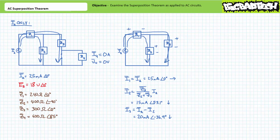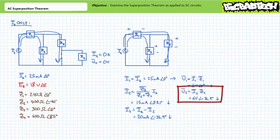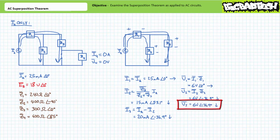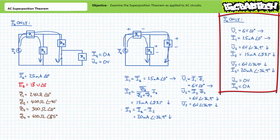Now let's consider voltage. An application of Ohm's law demonstrates V1 will be 6 volts at an angle of zero degrees, positive to negative left to right. V2 will be 6 volts at an angle of negative 36.9 degrees, positive to negative top to bottom. Given Z2 and Z3 are in parallel, V3 will also be 6 volts at an angle of negative 36.9 degrees, positive to negative top to bottom. The series-parallel analysis from the perspective of current source IA is now complete.